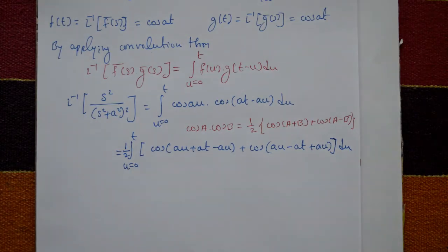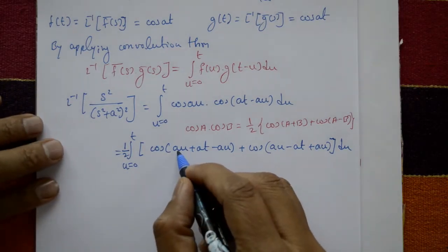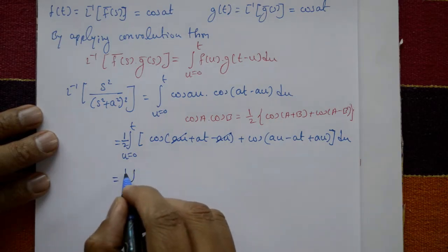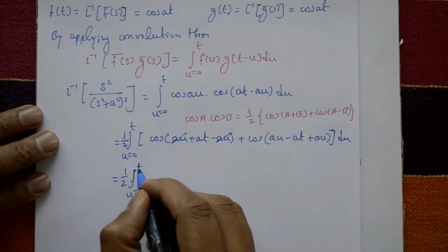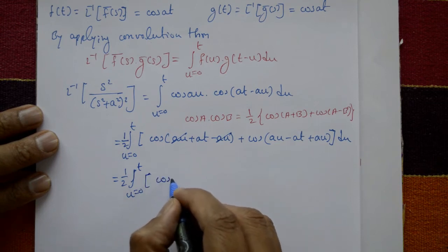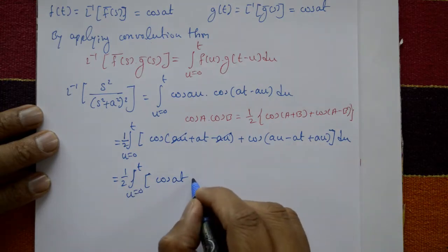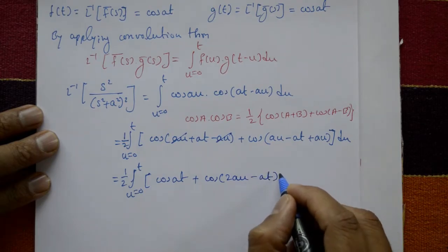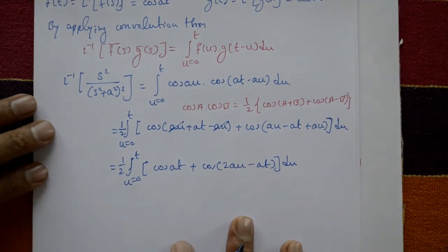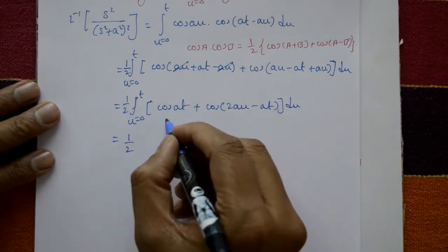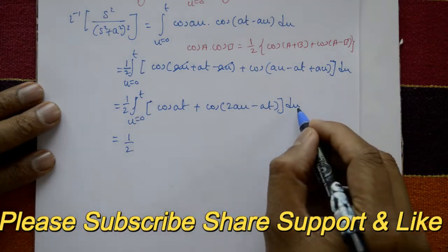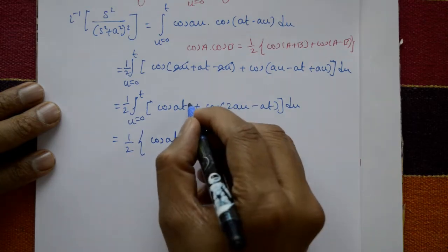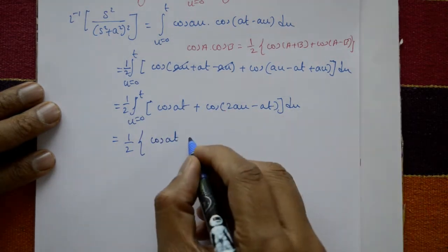Now the +au and −au terms cancel in the first part, giving cos(at). The second term becomes cos(2au − at). So we have (1/2) times the integral from 0 to t of [cos(at) + cos(2au − at)] du. Here cos(at) is a constant with respect to u.